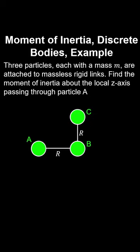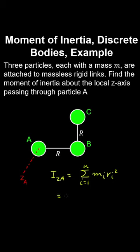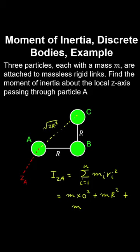We have a system of three particles, each with mass m, attached to massless rigid links. We're asked to find the moment of inertia about the local z axis passing through particle A, which points out of the screen. The moment of inertia of particle A is zero since it lies on the axis. For particles B and C, the radial distance is obtained using Pythagoras' theorem, giving mass times (√2 r)² which yields the result.